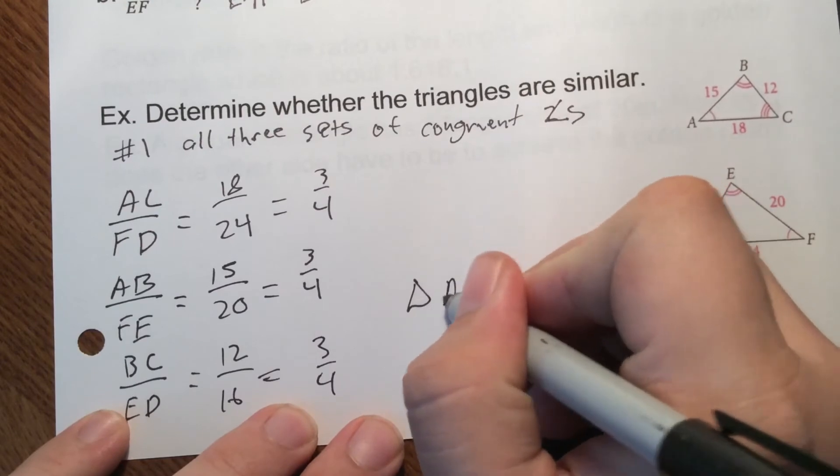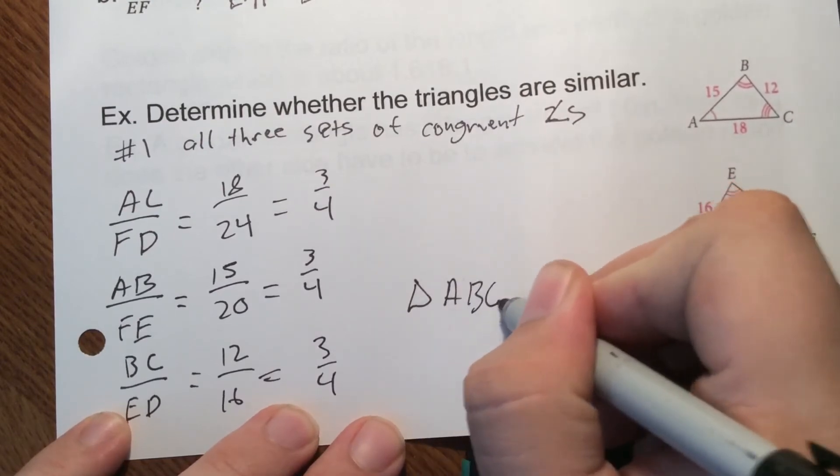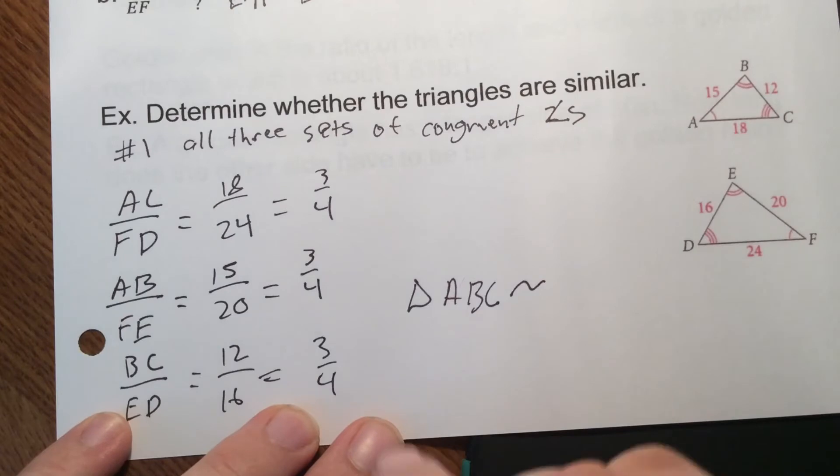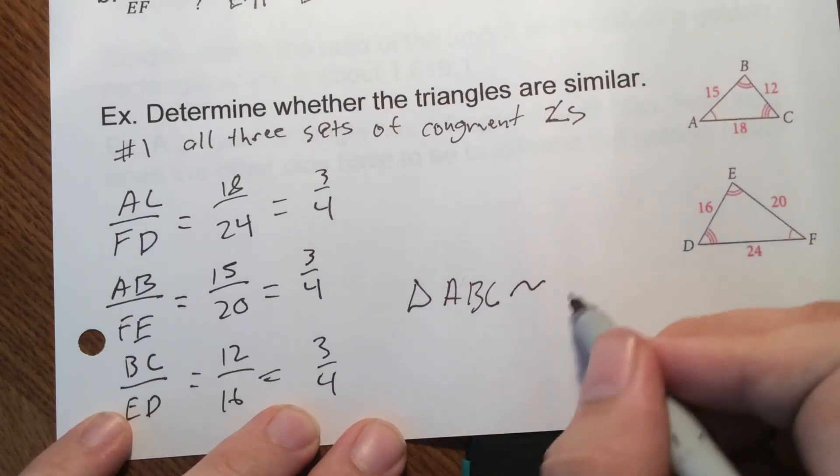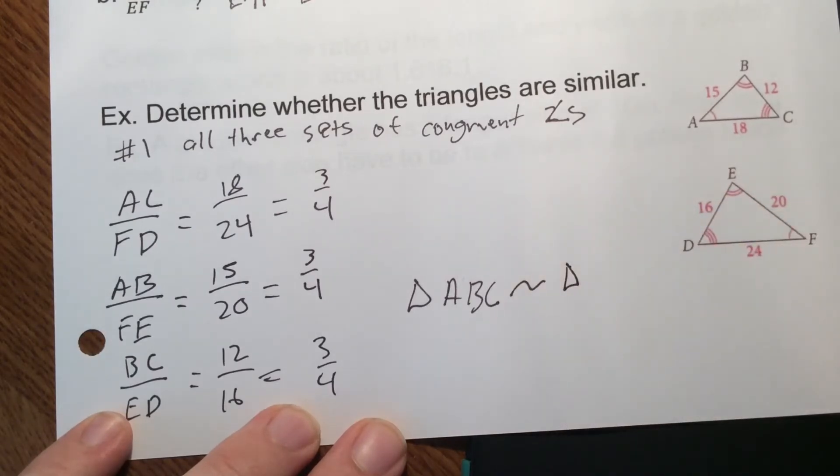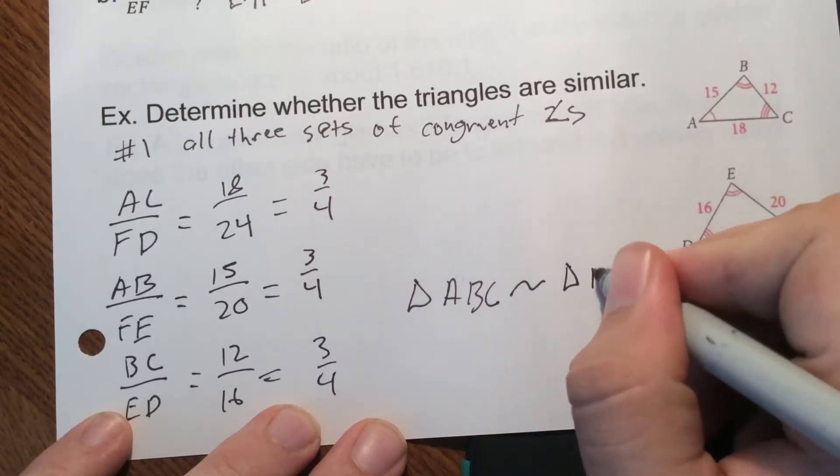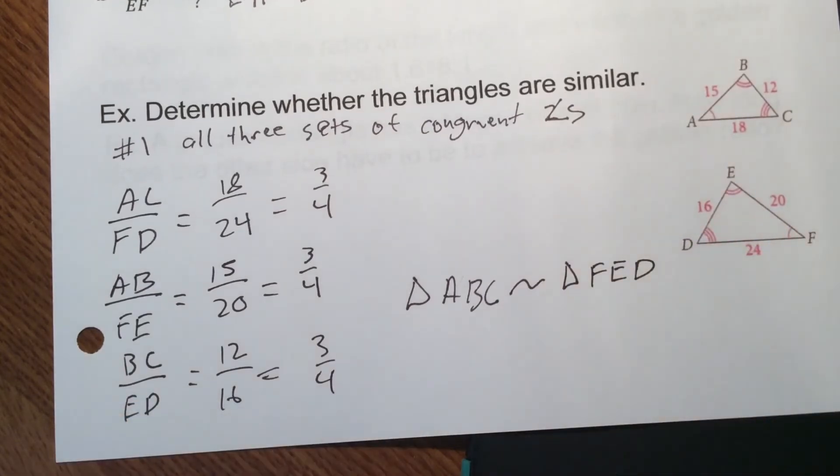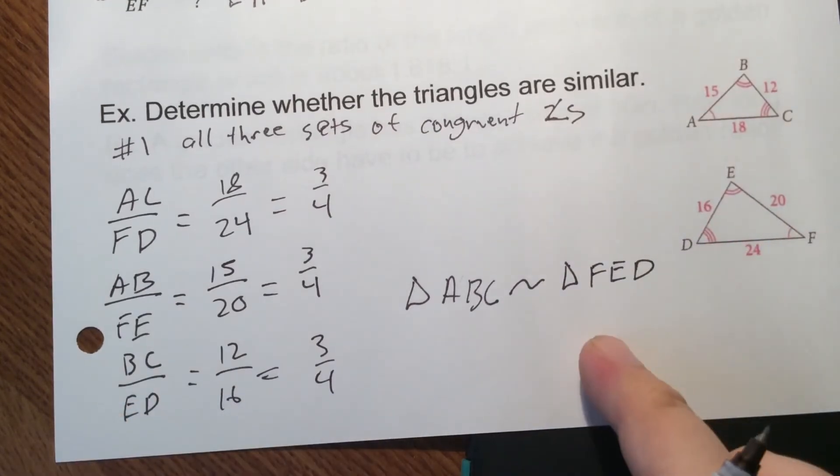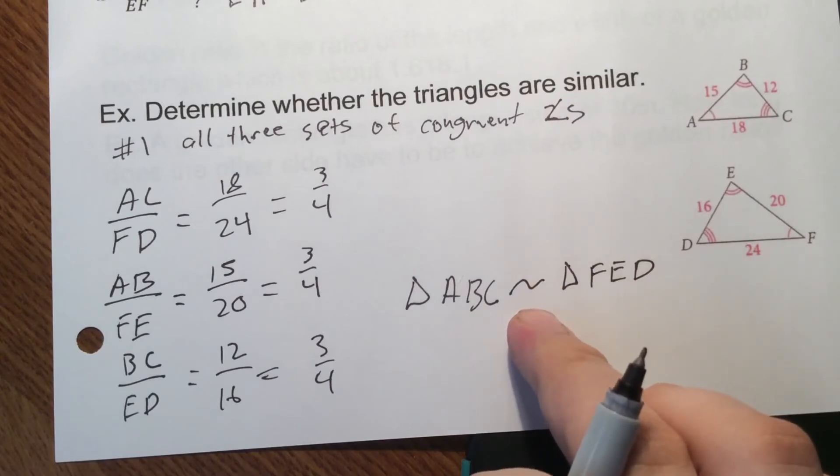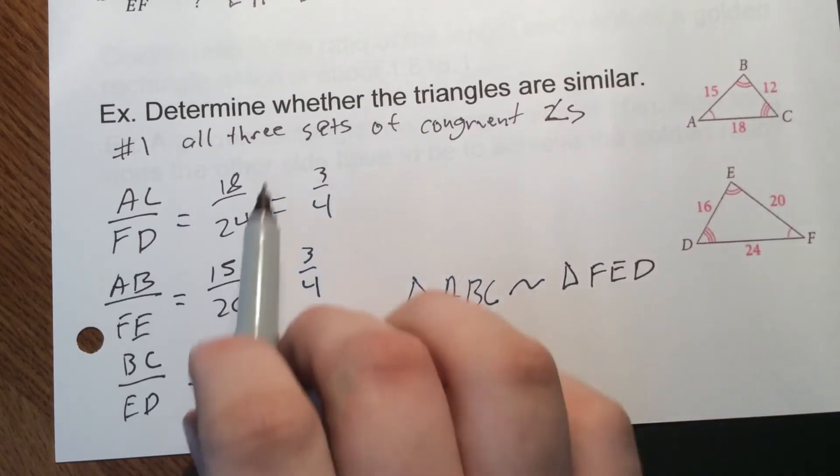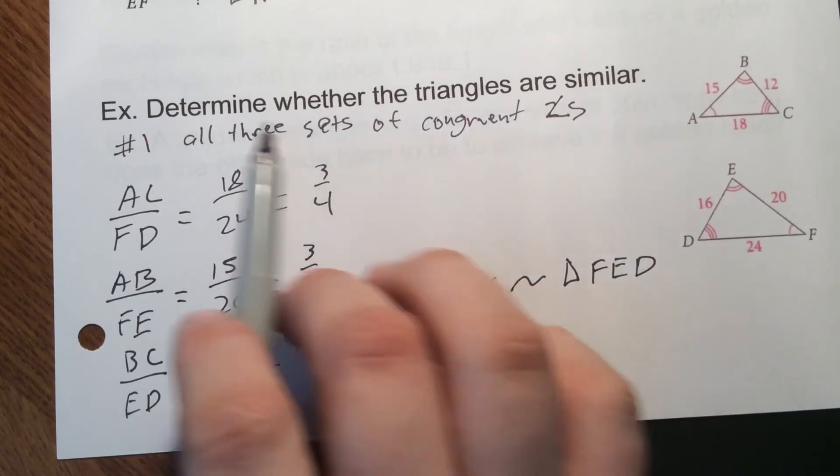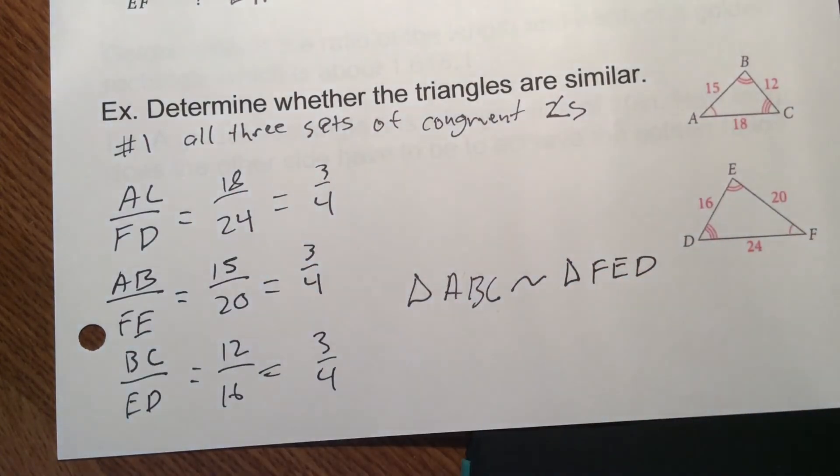So we can say that triangle ABC is going to be similar. Similar, we use just one squiggle. Congruent, we have the equal sign underneath the squiggle. But with similar, we just use the squiggle. And the other triangle that's similar to would be FED. So similarity statement, we use a squiggle instead of the congruent symbol of the squiggle over an equal sign. That's how you tell. So three sets of sides, same proportion. All three sets of angles are congruent. We're good to go.